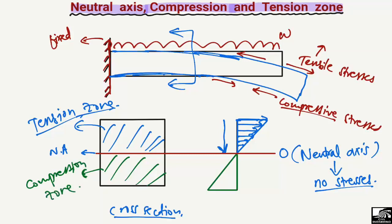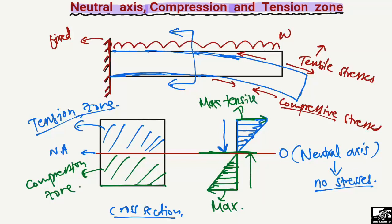In the compression zone of the cantilever beam, the maximum compressive stresses will be at the extreme bottom fibers, and then they decrease with depth toward the neutral axis where stresses become zero. So the maximum compressive stresses are at the extreme bottom fiber, and the maximum tensile stresses are at the extreme top fiber of the beam.